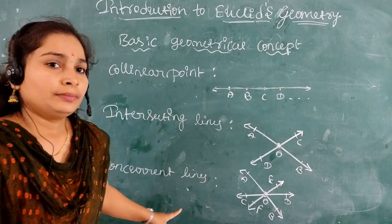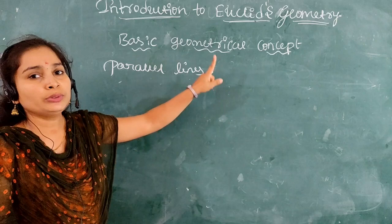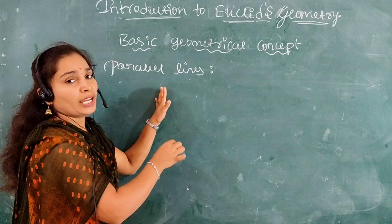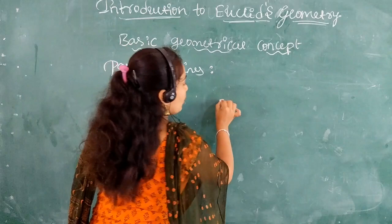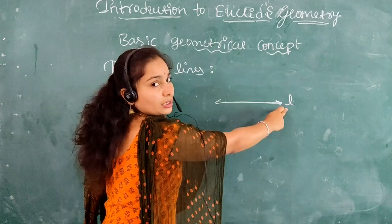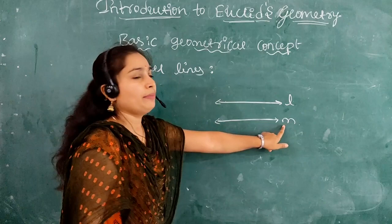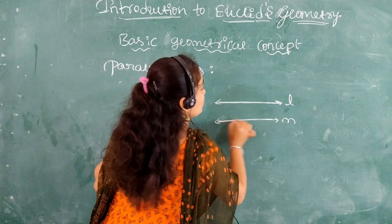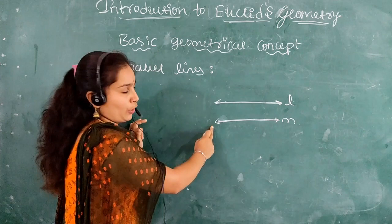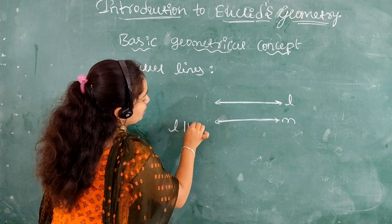The next point is parallel lines. Any two lines that do not have any common point are parallel lines. For example, line L and line M — there is no intersecting point between them, no common point. So we write L is parallel to M.